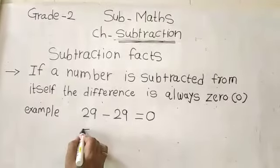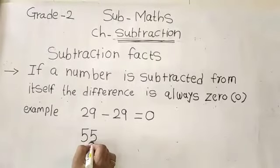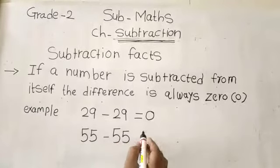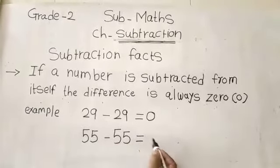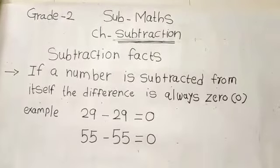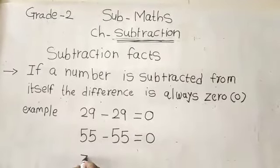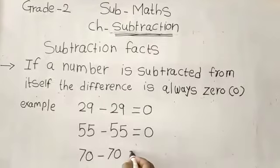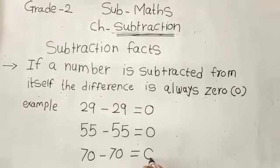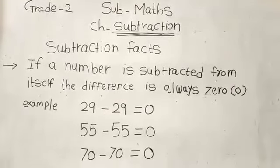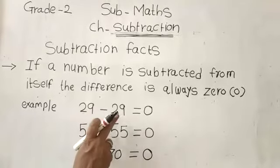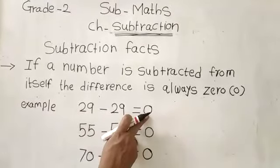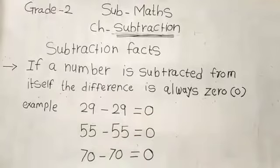Let's see another example: 55 minus 55 — the answer is 0. Another example: 70 minus 70 is equal to 0. So if a number is subtracted from itself, the difference is always 0. Understand, children?